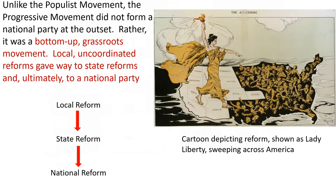Unlike the Populist Movement, the Progressive Movement didn't form a national party at the outset. Rather, it was a bottoms-up, grassroots movement. Local, uncoordinated reforms gave way to state reforms, and ultimately, as people coalesced politically, into a national party. So it progressed from uncoordinated local reforms, to coordinated state-level reform, to ultimately national reform late in the Progressive Era.